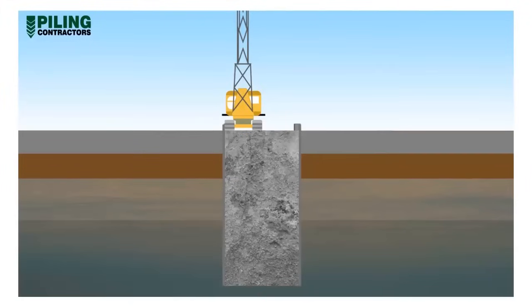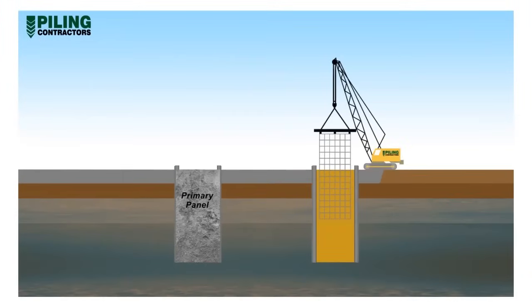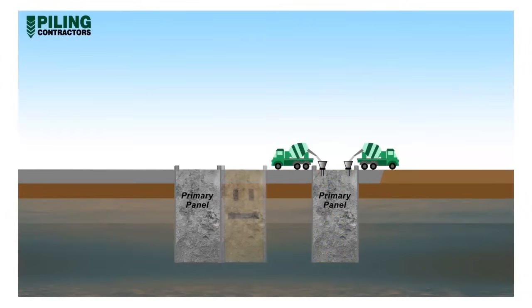The first panel constructed in a run-of-wall is called the primary panel. During concreting, the excavation grab and base crane is moved to another location, a safe distance from the concreted panel, and excavation recommenced on another primary panel. The next excavated panel is completed and concreted in the same procedure as just described.